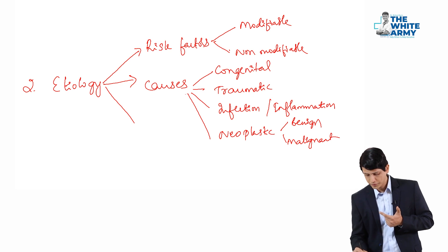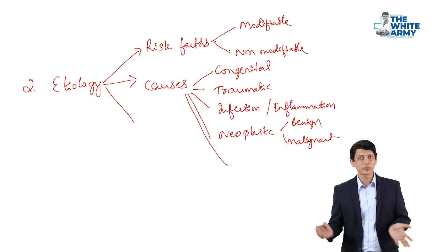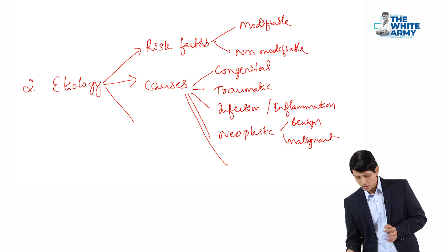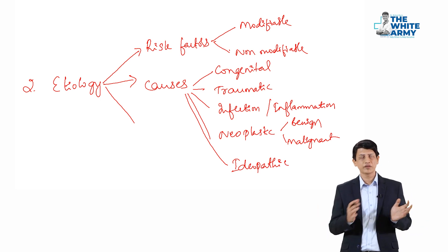And the fifth cause could be when it's a metabolic cause or autoimmune in nature, all these things we put together, we call idiopathic. So any condition, any given condition may belong to any of these causes.